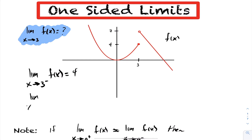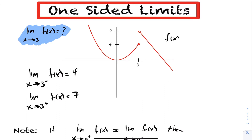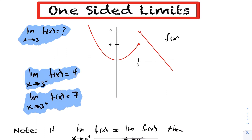And notice here, if I take the limit as I approach 3, I'm going to put a superscript of plus. That'll signify I'm now approaching 3 from the right-hand side. As I approach 3 from the right-hand side, my function f at x is approaching 7. So now we have some new notation: the limit from the left is illustrated by the superscript minus sign, and with the superscript plus, we have the limit from the right-hand side.